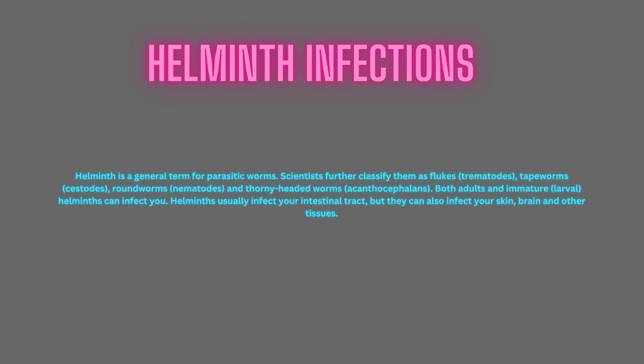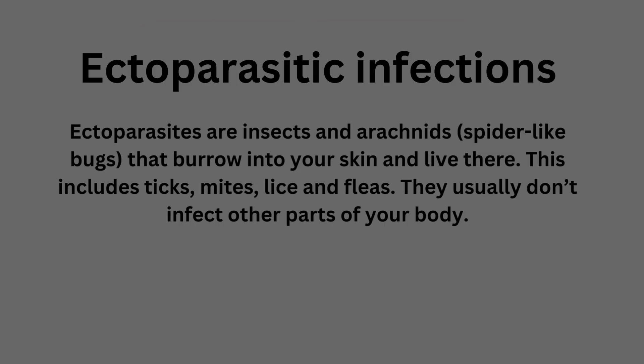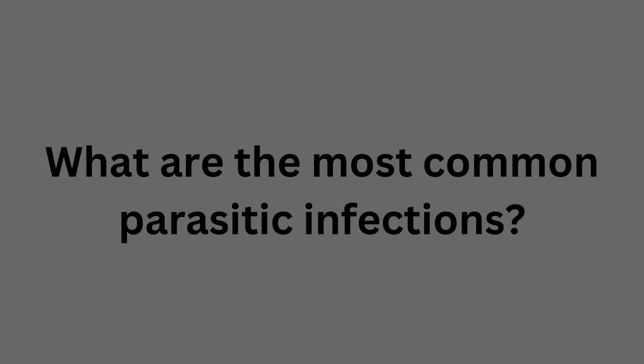Helminths infections is a general term for parasitic worms. Scientists classify them as flukes, tapeworms, roundworms, and thorny-headed worms. Both adult and immature forms can affect you, usually infecting your intestinal tract, but they can also affect your skin, brain, and other tissues. Ectoparasites are insects and arachnids — spider-like bugs — that burrow into your skin and live there. These include ticks, mites, lice, and fleas. They usually affect the skin and hair. Ticks live in tall grass and when they attach to you, they can cause Lyme disease and possible death.